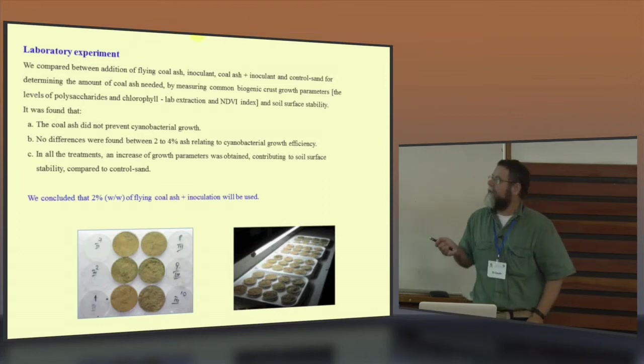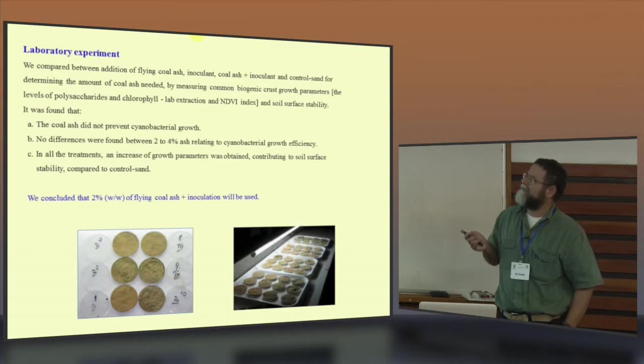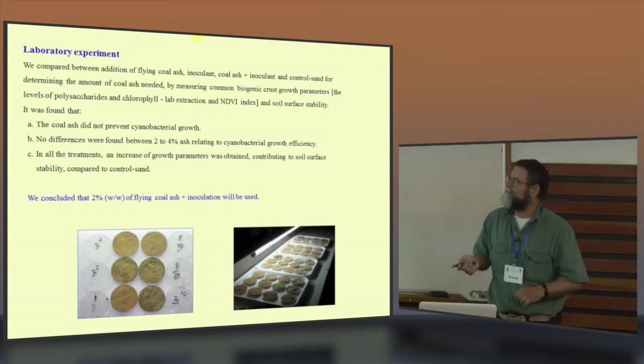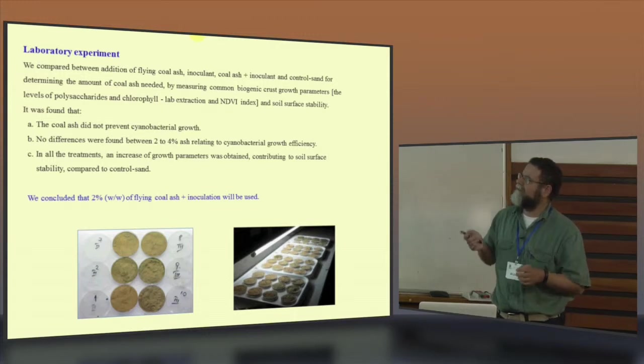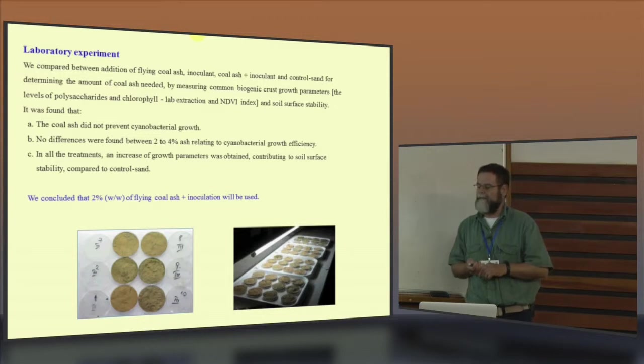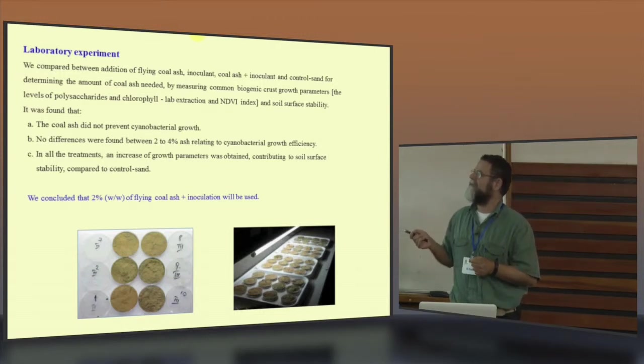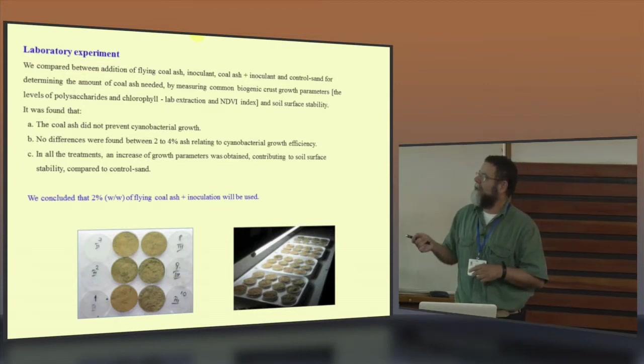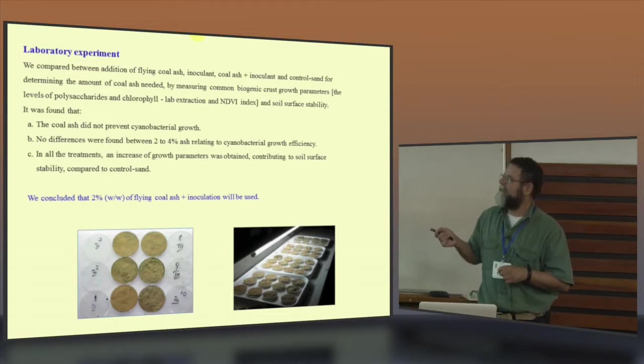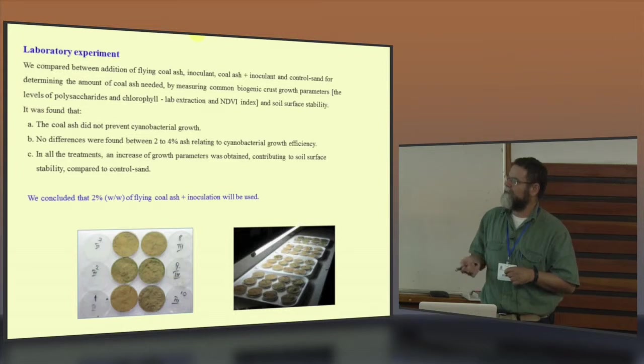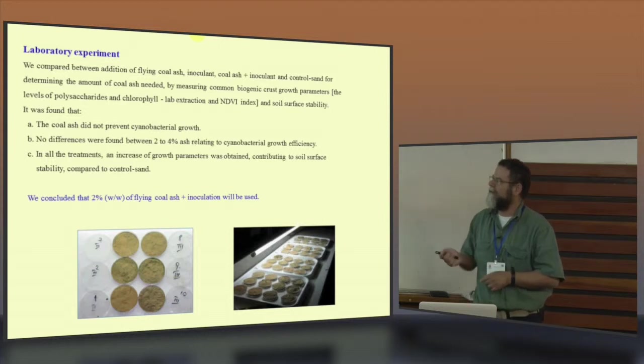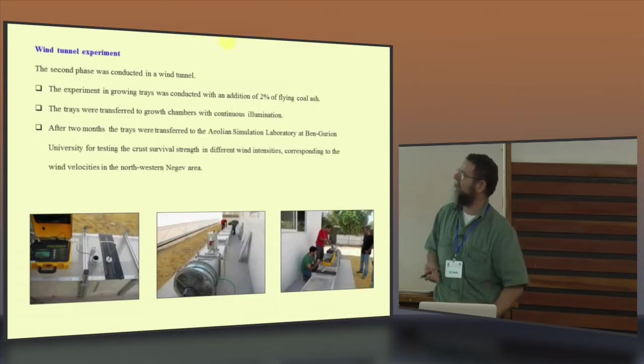How to measure the parameter of the growth of the cyanobacteria. In the literature, we can learn about the levels of the polysaccharide and the chlorophyll by lab extraction and NDVI index. And we can measure the soil surface stability. The results from this small experiment in the lab, first, the coal ash did not prevent cyanobacterial growth, so we can keep on. No difference were found between 2% to 4% relating to the cyanobacterial growth efficiency. In all treatment, the increase of growth parameter was obtained, contributing to soil surface stability compared to the control. So we concluded that we can use 2% of coal ash plus inoculated cyanobacteria.